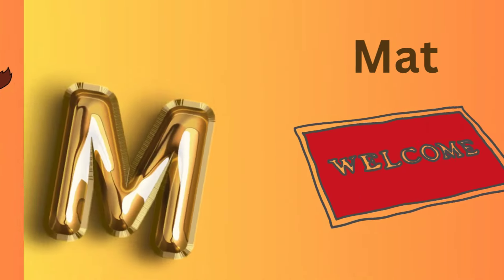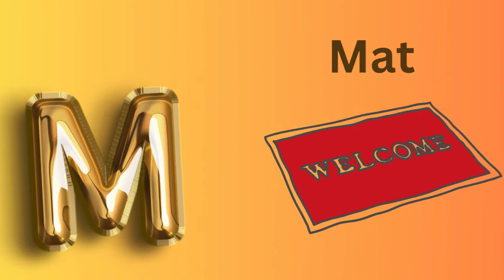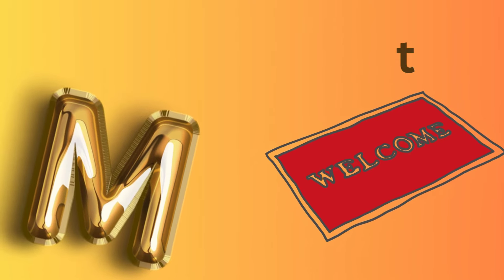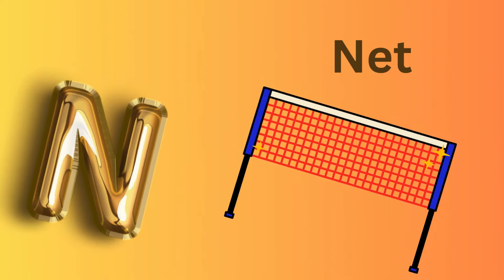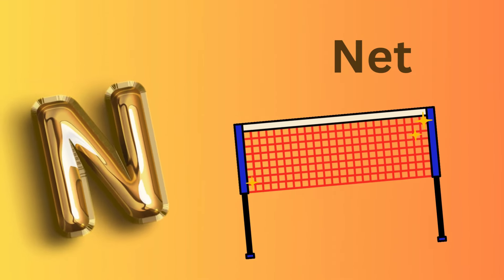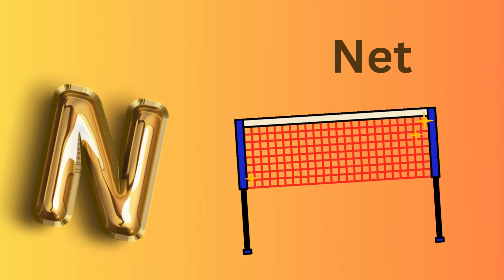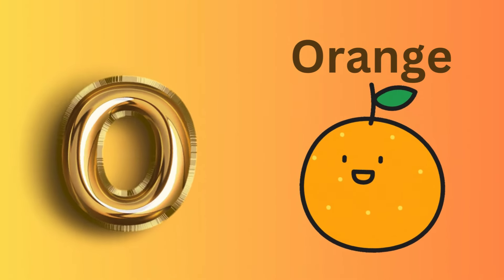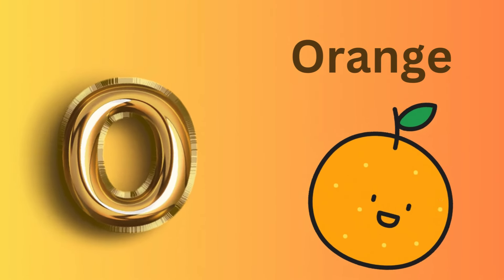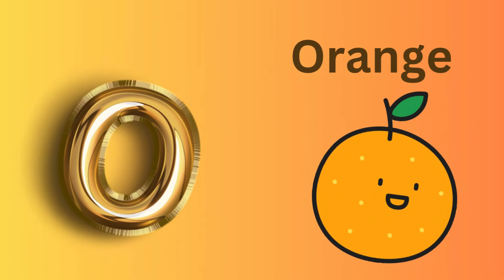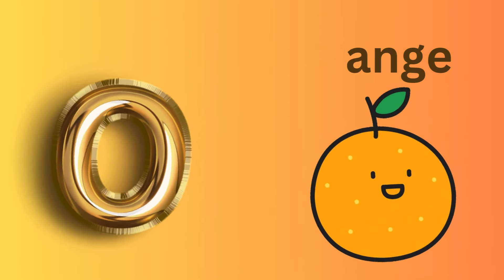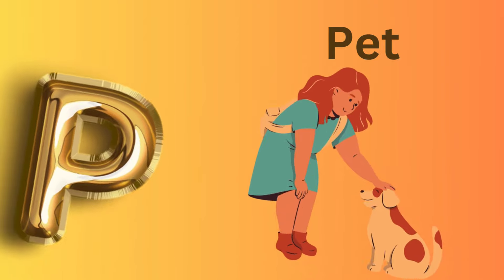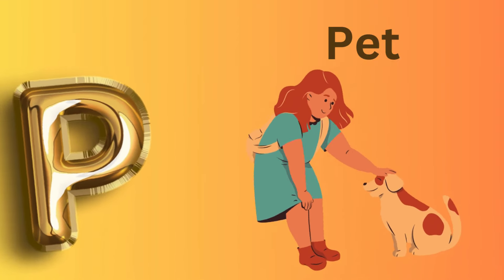M is for Mat, M-M-Mat. N is for Net, N-N-Net. O is for Orange, O-O-Orange. P is for Pet, P-P-Pet.